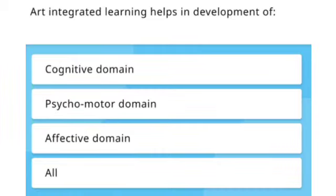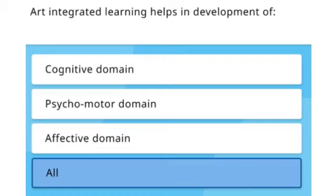Next question: Art integrated learning helps in the development of which domain — cognitive domain, psychomotor domain, affective domain, or all? The right answer is all.